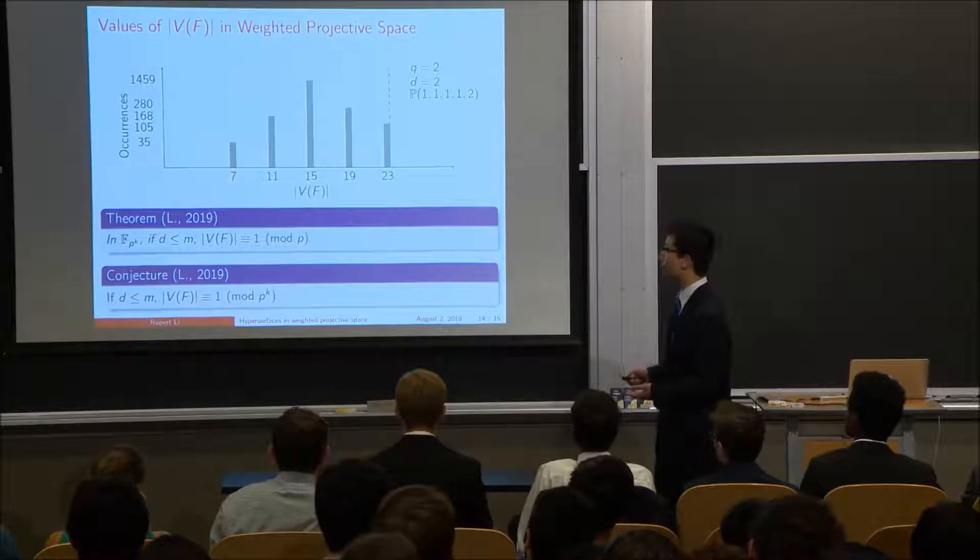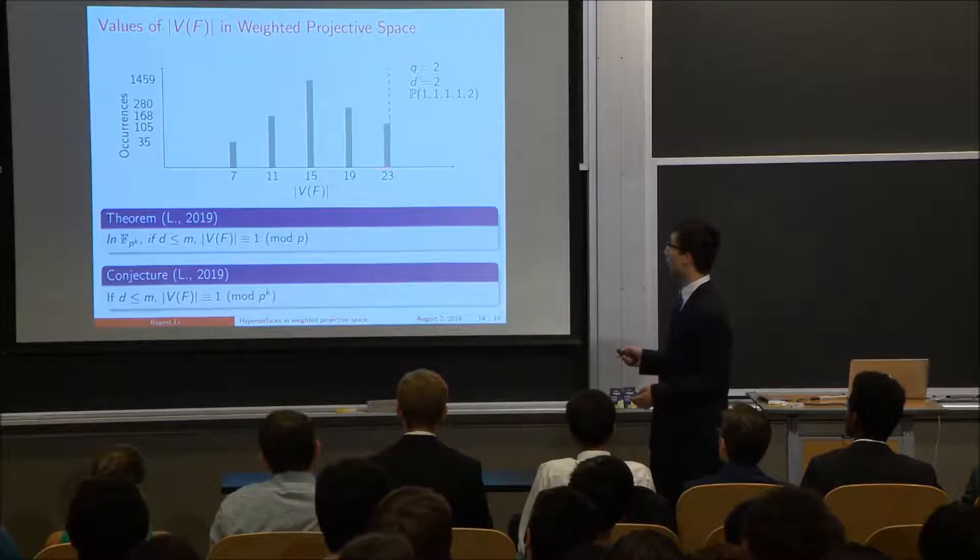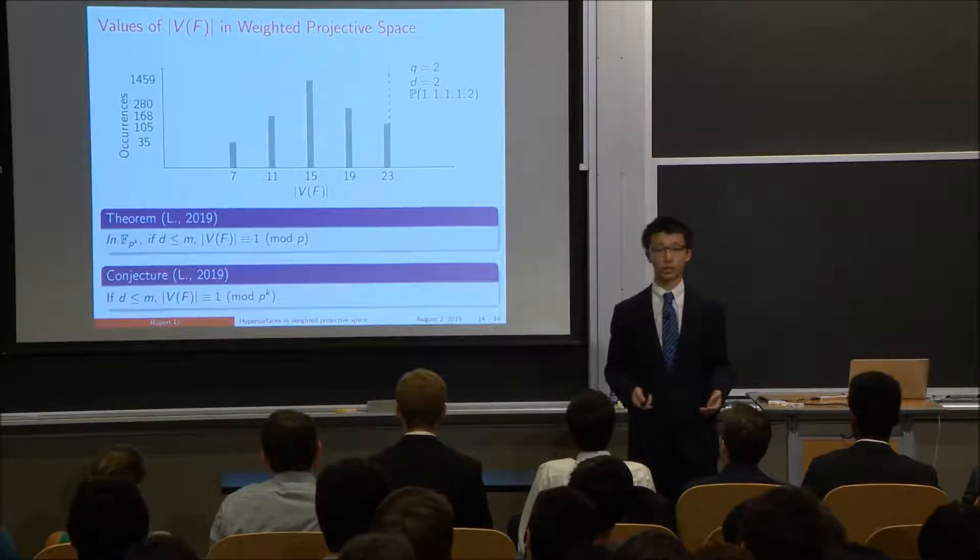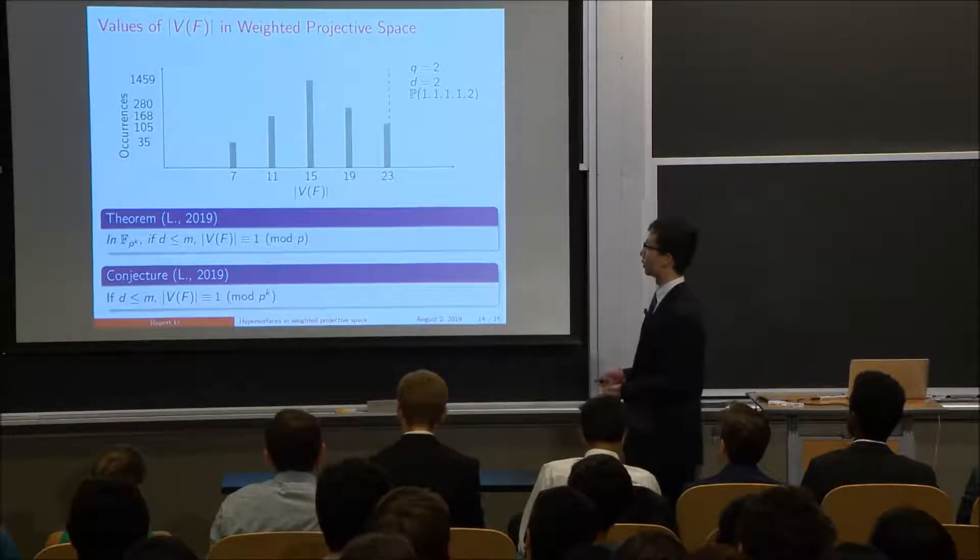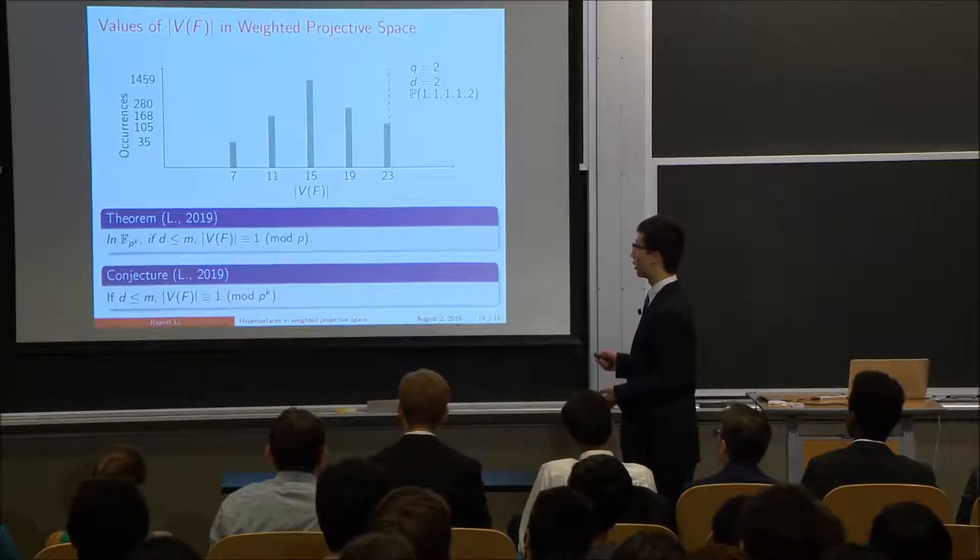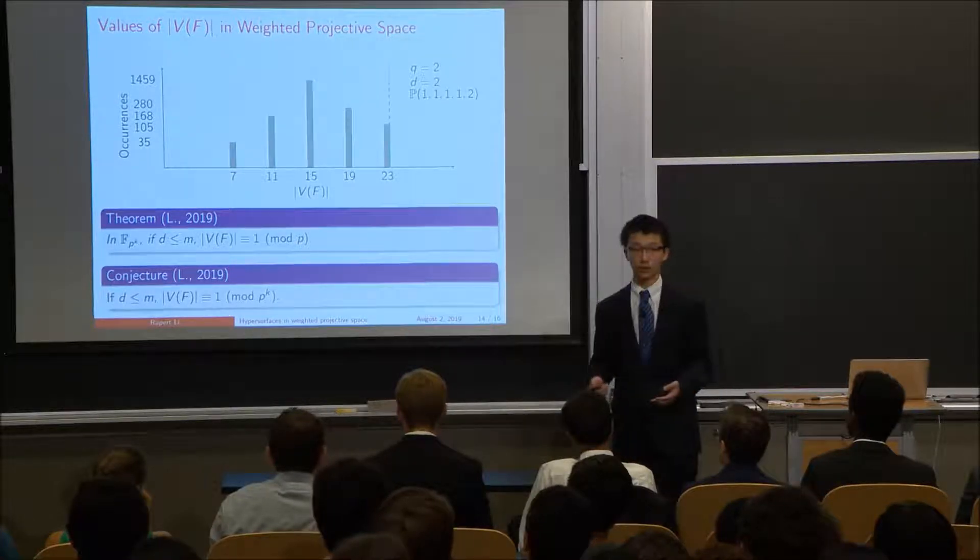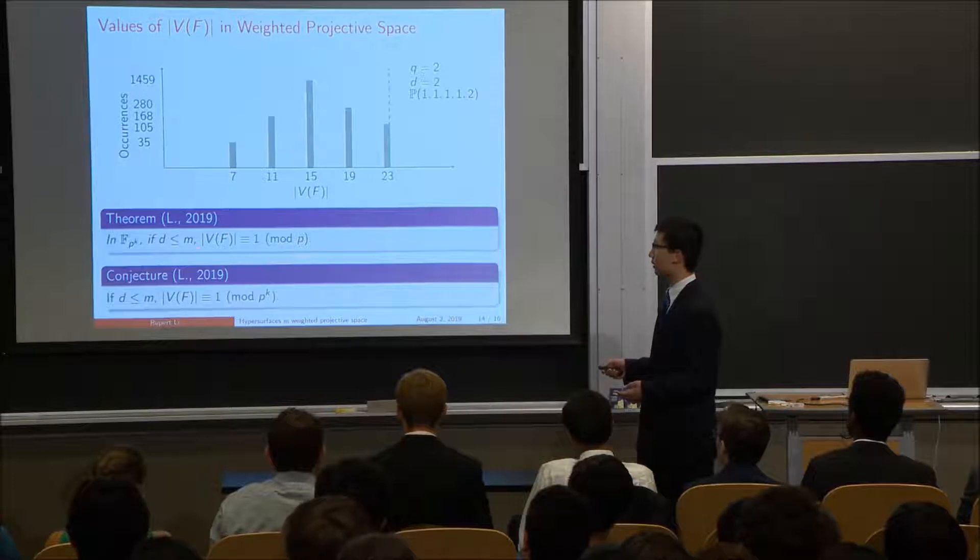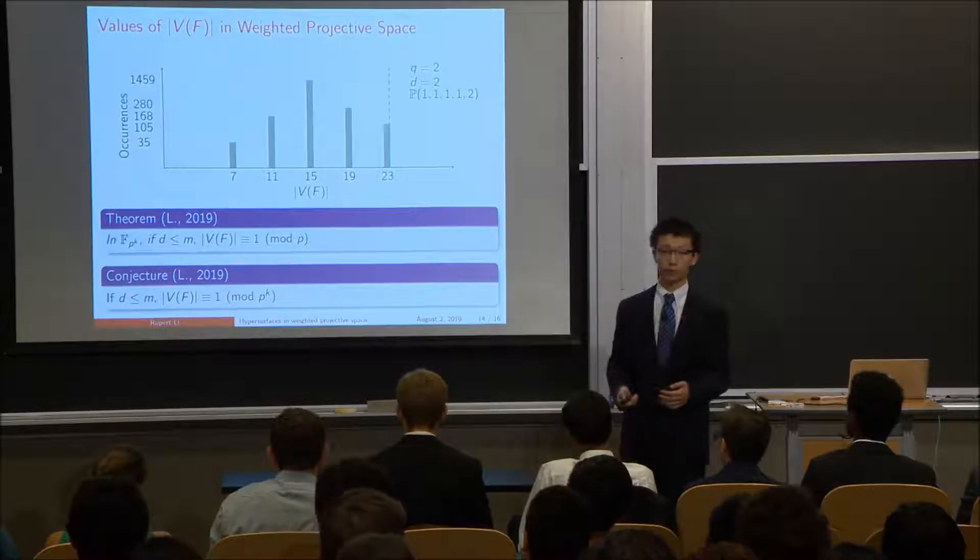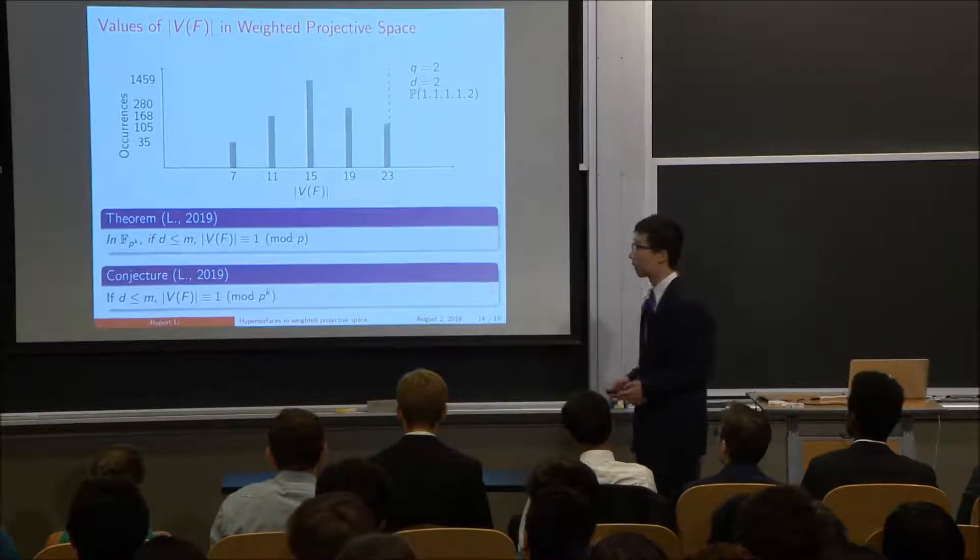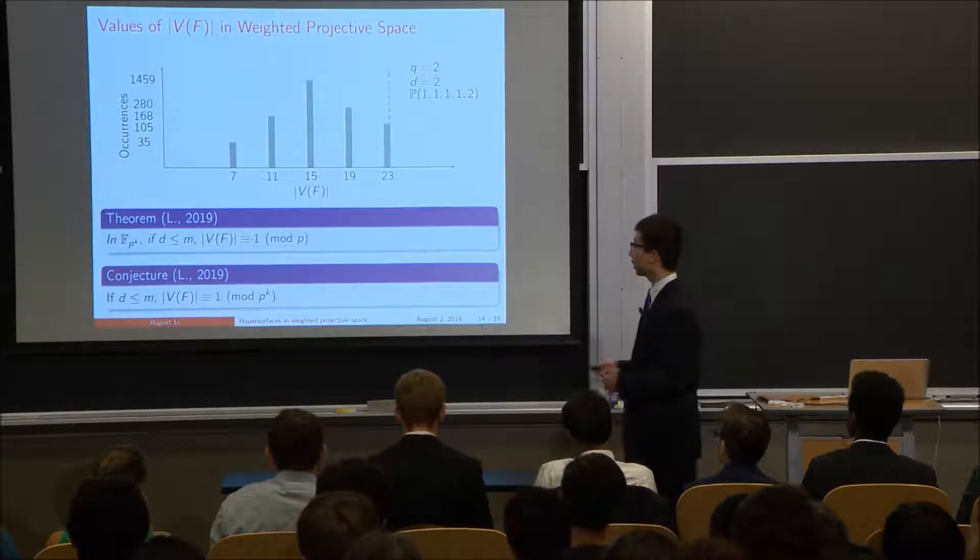If you actually plot the values of the number of solutions you can have, you can get a graph like this for these parameters right here. And this line, this dashed line right here, indicates the bound I just proved, because the number of solutions can't exceed this line, that value. But one thing you do notice about this graph is that there are only very discrete values that you can have as the number of solutions. And so we observed this pattern, and so we set out to try to prove something about it. And we proved that it has to satisfy this modular congruence, that the number of solutions has to be congruent to 1 mod p. We actually conjecture an even stronger result that it has to be congruent to 1 mod p to the k, which would better represent the actual spaces, these gaps, that you see in these possible values.